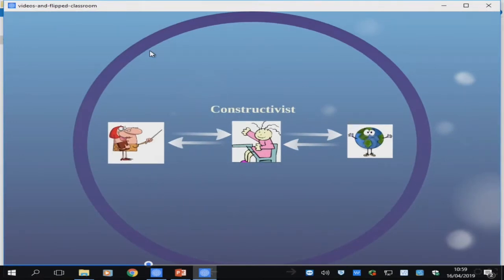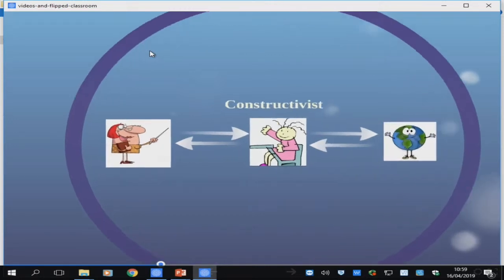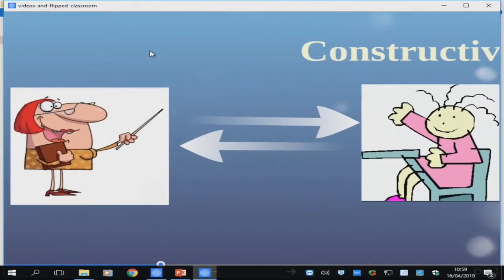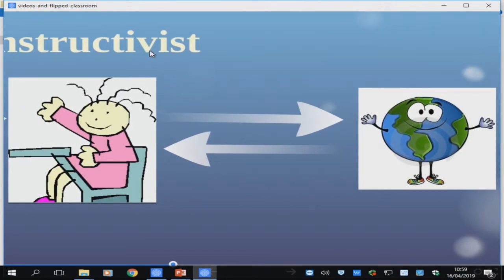But the dominant model of understanding how we learn today is the constructivist model, a slightly more complicated model. Two key differences. One is that we now understand that the relationship between the teacher and the learner is an interactive relationship, not a one-way relationship. You have to assimilate what you're being told with what is already in your head. And that brings me to the second part. Students don't come as blank books. They come with prior knowledge. And that means that learning is different for every single individual.